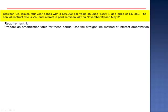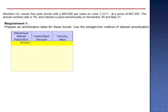We're asked to prepare an amortization table for these bonds using the straight line method. On June 1st, 2011, the bonds sell for $47,350. This is an initial discount of $2,650. And we know that at the end of the bond's life, May 31st, 2015, the unamortized discount needs to be zero so that the carrying value is equal to the par value, $50,000.